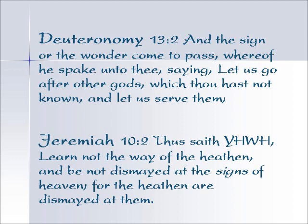Jeremiah 10:2 — Thus saith Yahweh, learn not the way of the heathen and be not dismayed at the signs of heaven, for the heathen are dismayed at them. We know the Father set the signs of heaven in place to determine the seasons, the moedim, the appointed times, the days, and the years. But the heathen have set up a different paradigm, commonly called astrology, which purports that the sun, moon, and stars have influence and power over you. We are not to think that way or be afraid of the signs in the heavens.